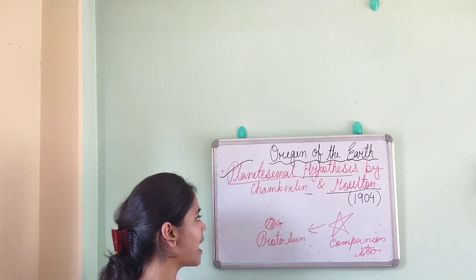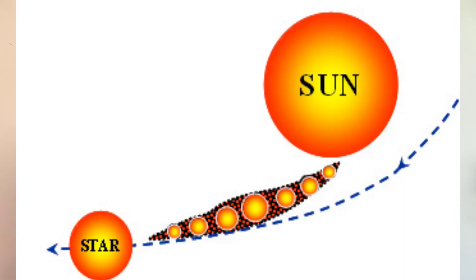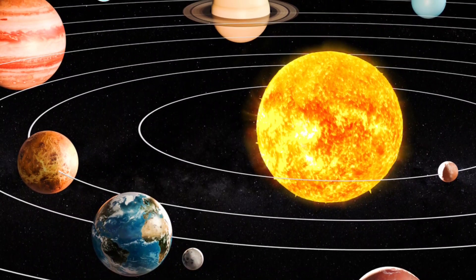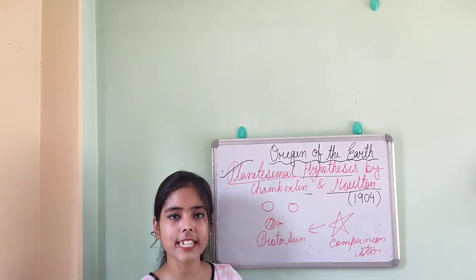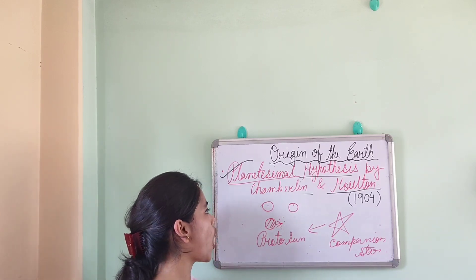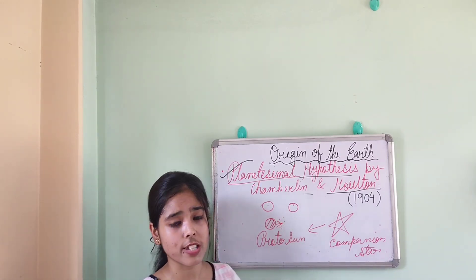When they were scattered into space, after cooling and solidification they cooled down and became solid particles — that is, the planets. The same process also worked on these planets, and likewise small satellites came out from the planets and started revolving around them.